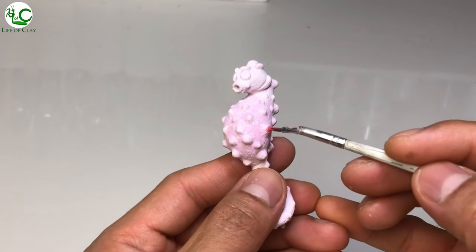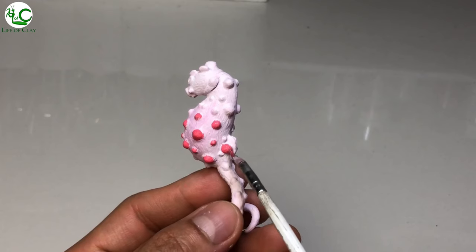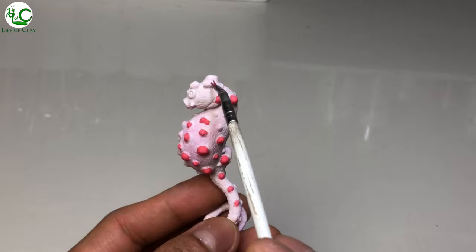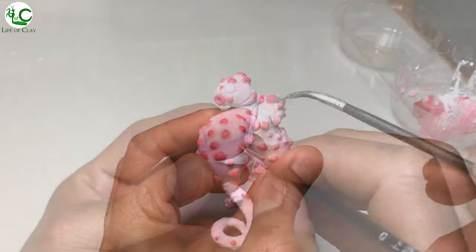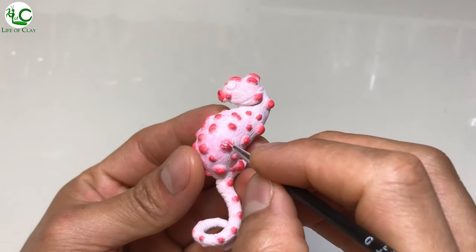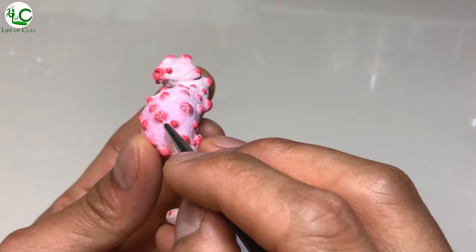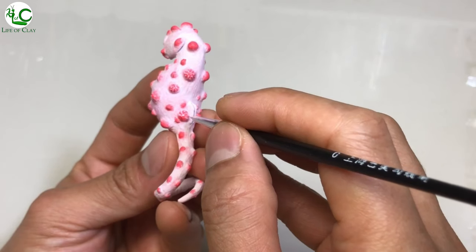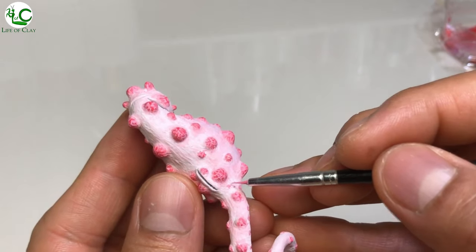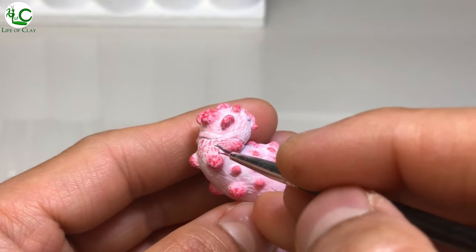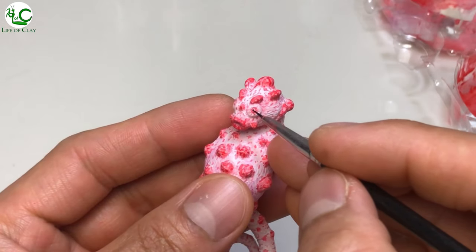Next painting our seahorse and I use alizarin crimson and bright red mix in painting its tubercles. Then adding irregular vein patterns on the tubercles using the light pink mix. Then I also add blotchy patterns around it. And then painting the iris of its eyes with black.